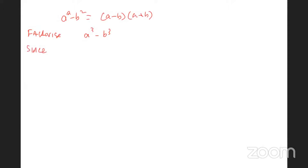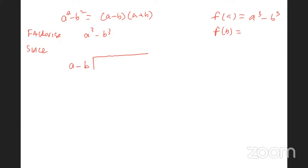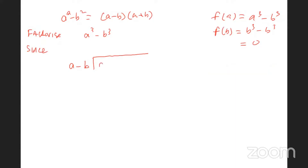What is guaranteed to be a factor of a cubed minus b cubed? The answer is (a minus b). How can we check it? If f(x) equals a cubed minus b cubed, you check f(b): f(b) will be b cubed minus b cubed, which is zero. Remember the rule — if the remainder is zero when you divide f(x) by (ax + b), then it's a factor.